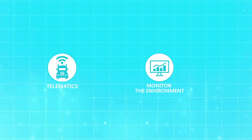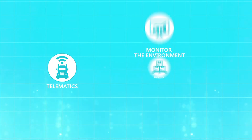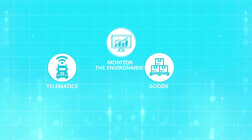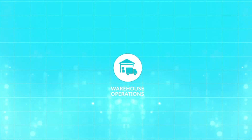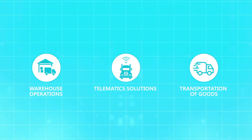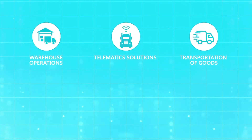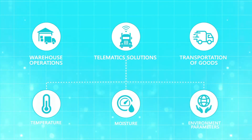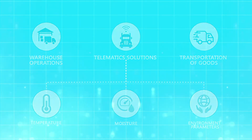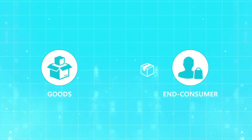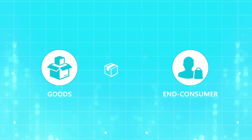Telematics can help to monitor the environment in which your goods are stored throughout the value chain of the logistics industry, be it warehouse operations or transportation of goods. With our telematics solutions, organizations can monitor and control the temperature, moisture, and other environment parameters to which the finished goods are subjected during their journey to reach the end consumer.